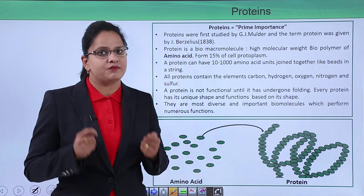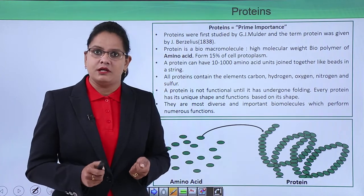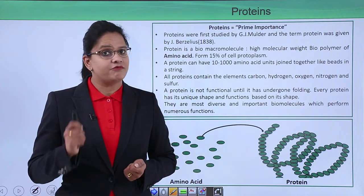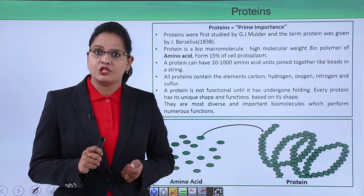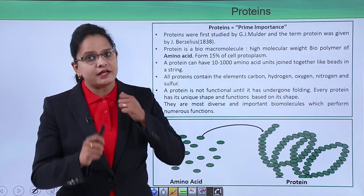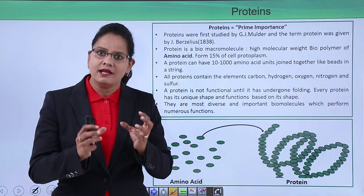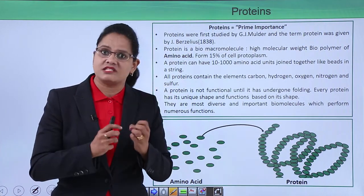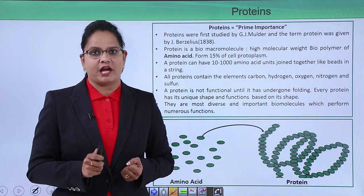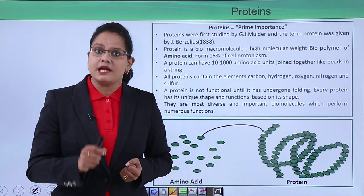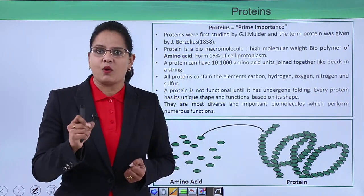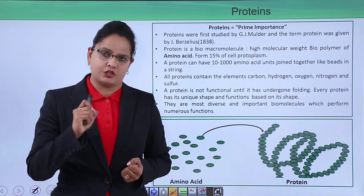Around 10 to 1000 amino acids join together to form a beaded necklace type of structure, which is protein. But this beaded necklace is still not functional. It will become functional only when the protein has undergone certain foldings and bondings to acquire a specific shape. That shape is responsible for the function of the protein, so a protein is biologically functional only if it has acquired a particular type of structure.